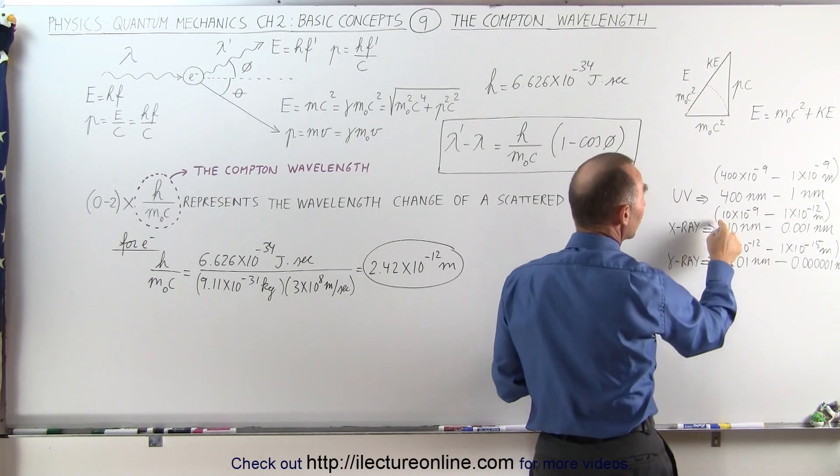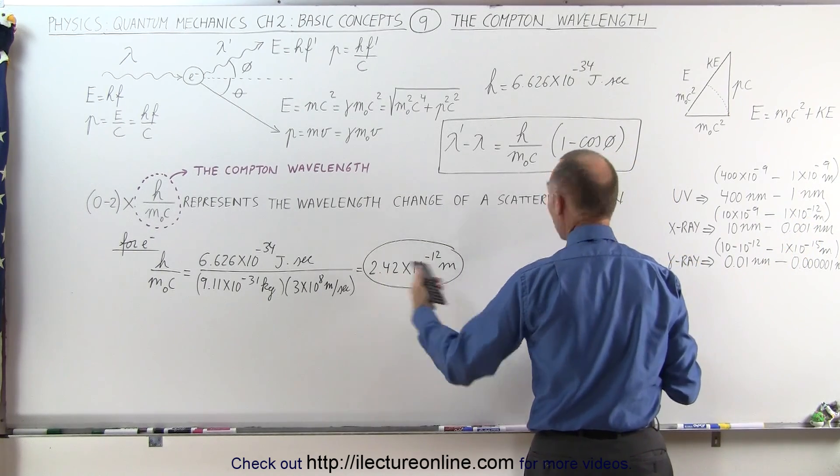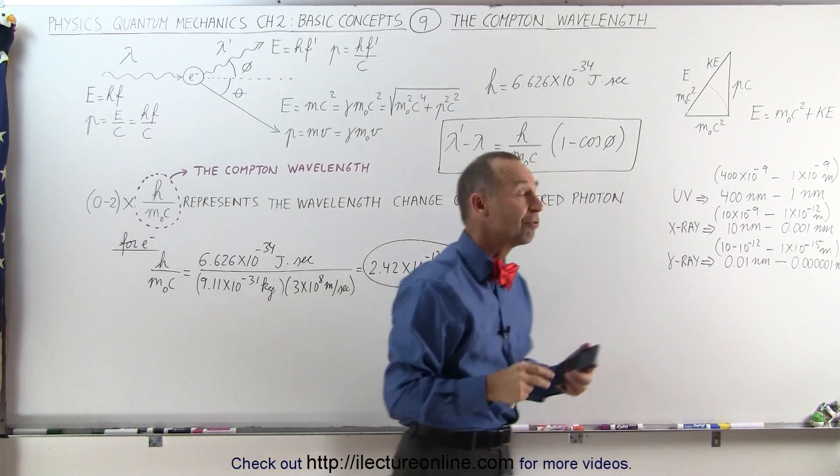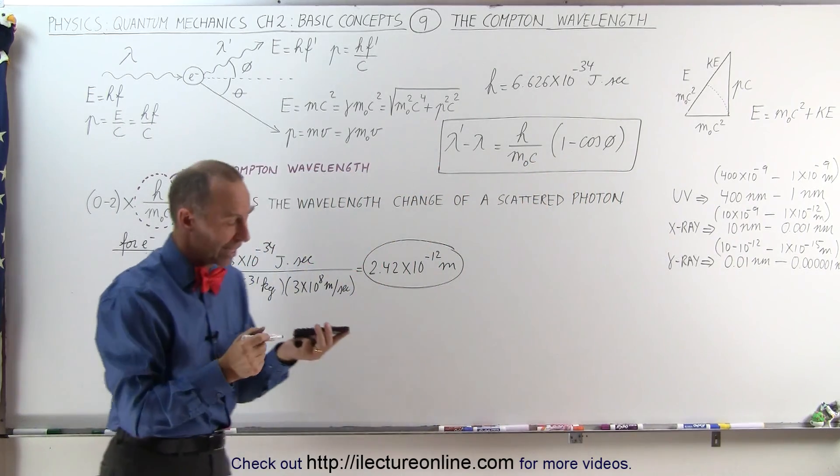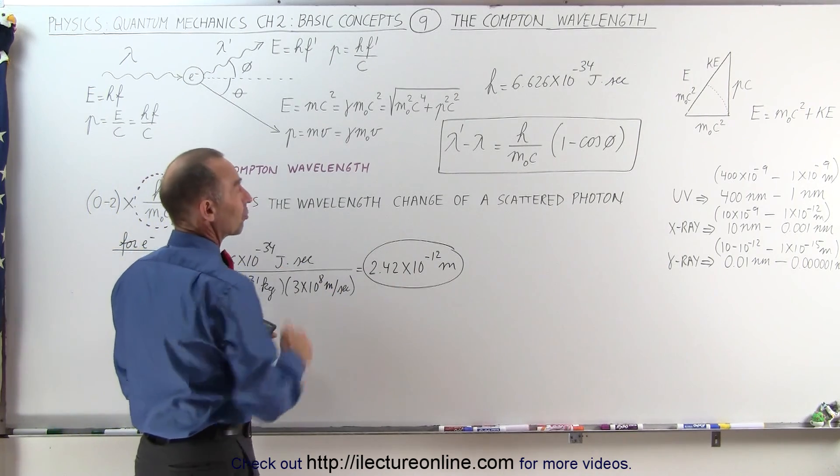But for an x-ray photon, which can be as small as 1 times 10 to the minus 12, you can see that this is in the ballpark of the size of a high-energy x-ray photon. And so with x-rays, you can indeed measure the change in the wavelength if they're scattered off of electrons.